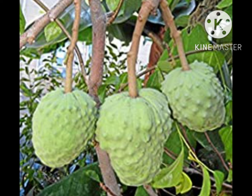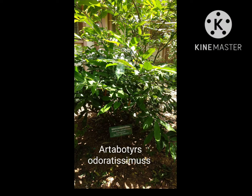One to many ovules in each carpel on basal or marginal placentation. Fruit is an aggregate of berries. Seed has ruminate endosperm — ruminate means a dry type.